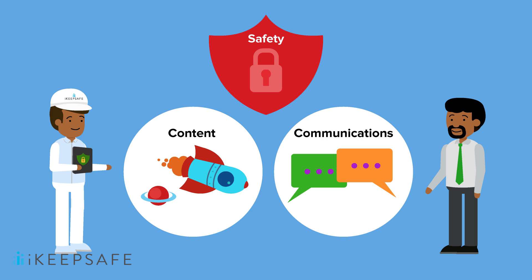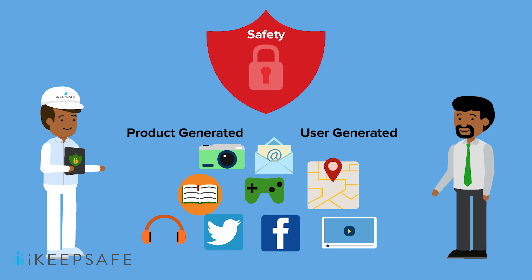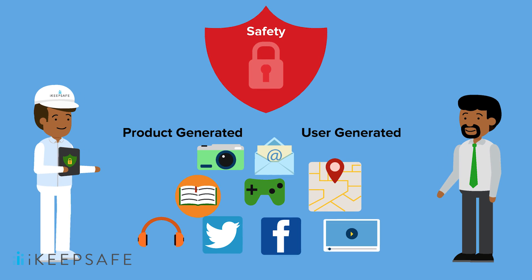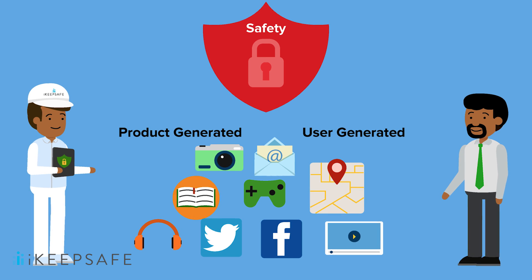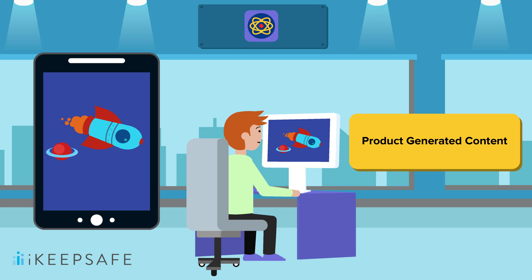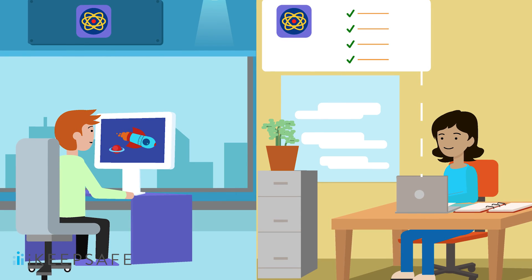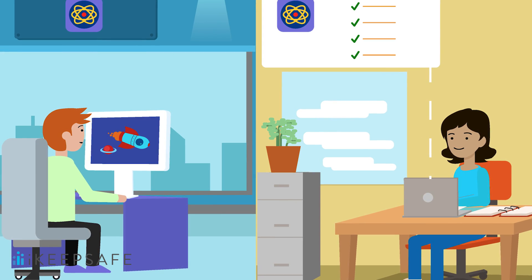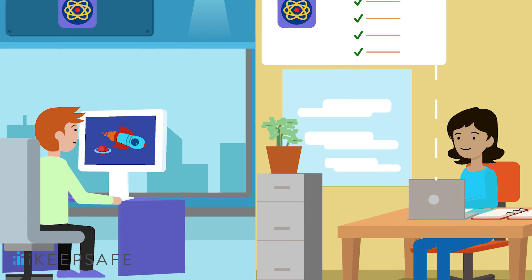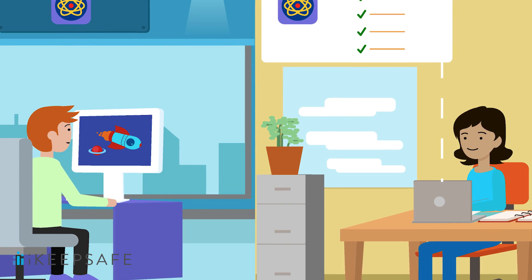When reviewing for safety, there are two elements you're going to need to focus on – content and communications. Visual images, video and audio are all different types of content. Content can either be product generated or user generated. Product generated content is contained within the service and is created by the company itself. Just as you would with a film, book or song, you should review product generated content to make sure that it is both appropriate for your students and complies with school policy.